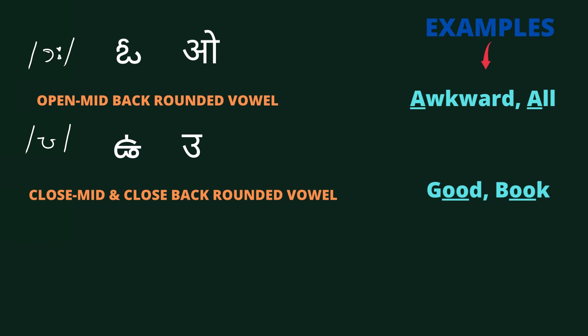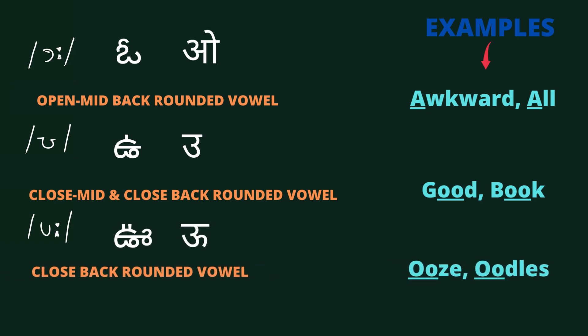The last vowel we are going to learn in this session is /uː/. It is a close back rounded vowel. Examples include words with the 'oo' sound.